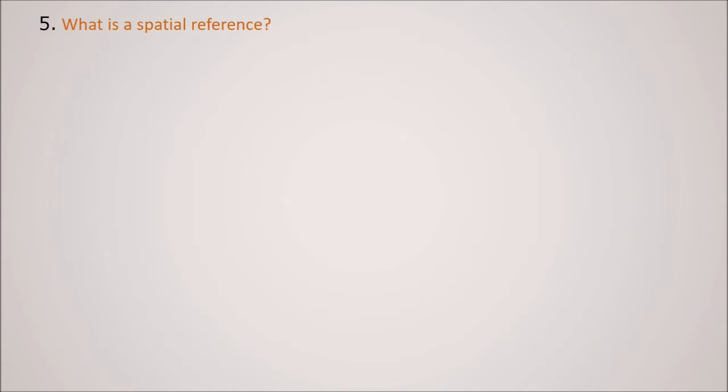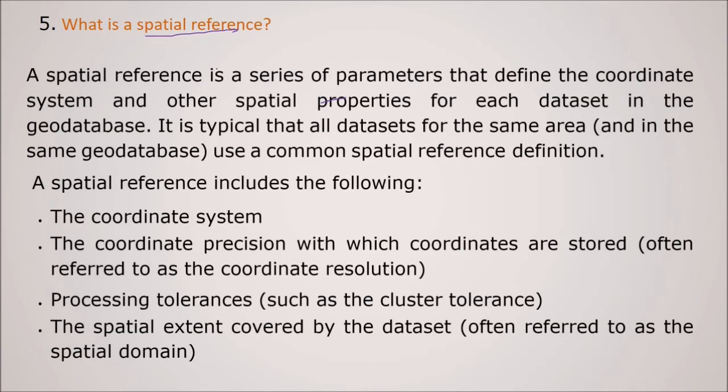What is a spatial reference? What do we mean when we say spatial reference? A spatial reference is a series of parameters that define the coordinate systems and other spatial properties of each data set in the geodatabase. And it is typical that all data sets for the same area and in the same geodatabase use common spatial reference definition. So what this spatial reference contains? The coordinate system, the coordinate precision with which the coordinates are often referred to as the coordinate resolution and the processing tolerances such as cluster tolerance. And the spatial extent which is covered by the dataset, that is known as the spatial domain.